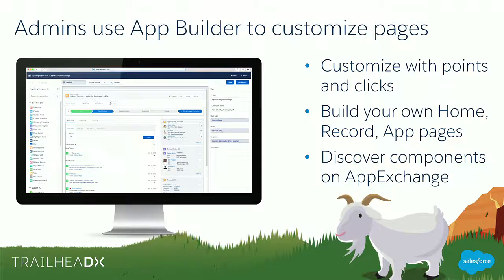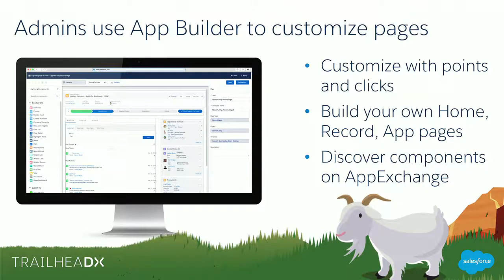So why is this session important? Admins use the App Builder to customize Lightning Experience. The App Builder itself is what we call a WYSIWYG tool — admins don't have to know any code or touch a line of code, and they can do some really powerful customizations in Lightning. They can build their own home pages, record pages, or even app pages. It's a blank canvas for them to go and use components. They can even add components directly from the App Exchange, which is fully integrated in the App Builder.